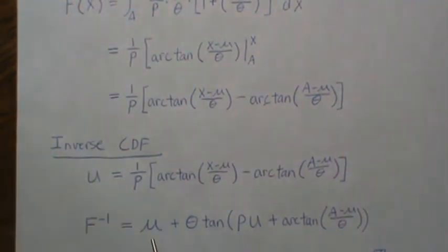if you generate a uniform 0, 1 random variable, and plug it in here, and then calculate this, then you just generated a truncated Cauchy distribution.